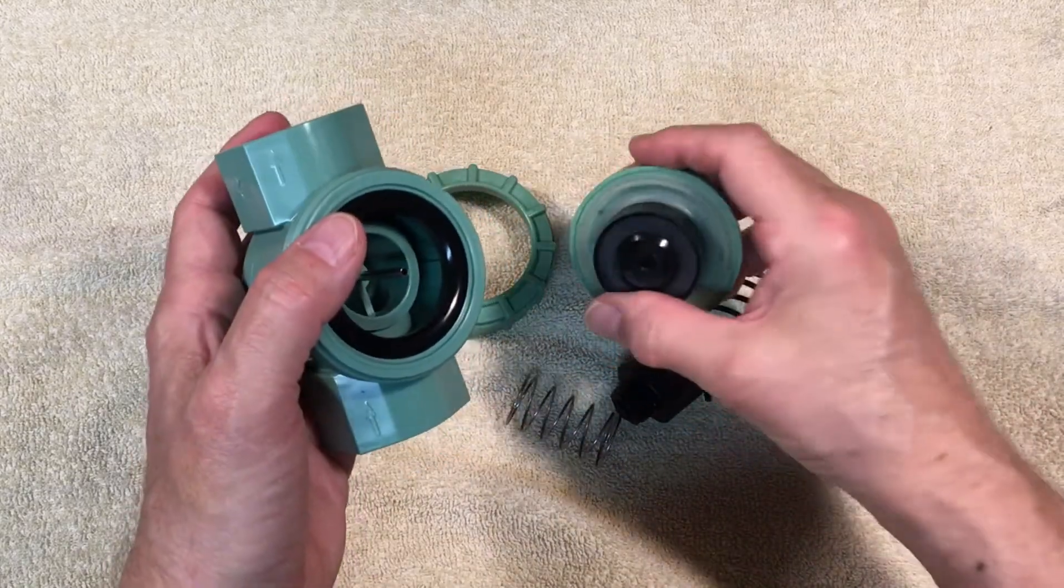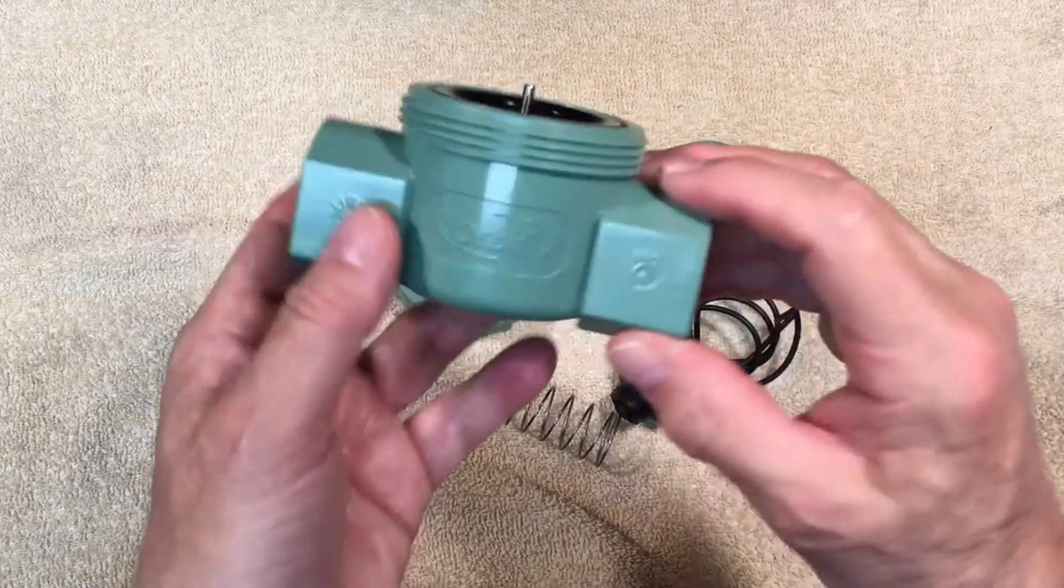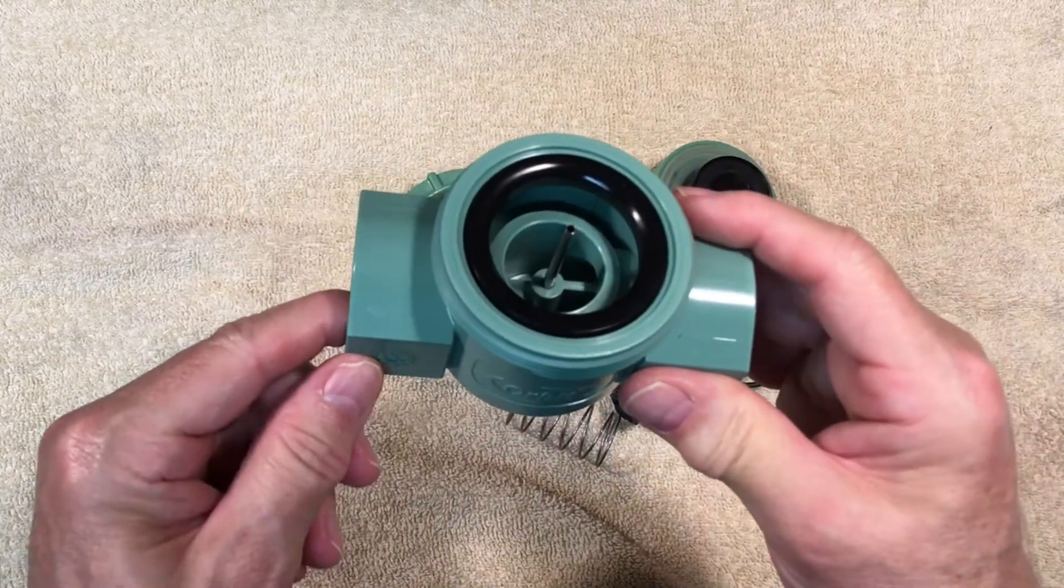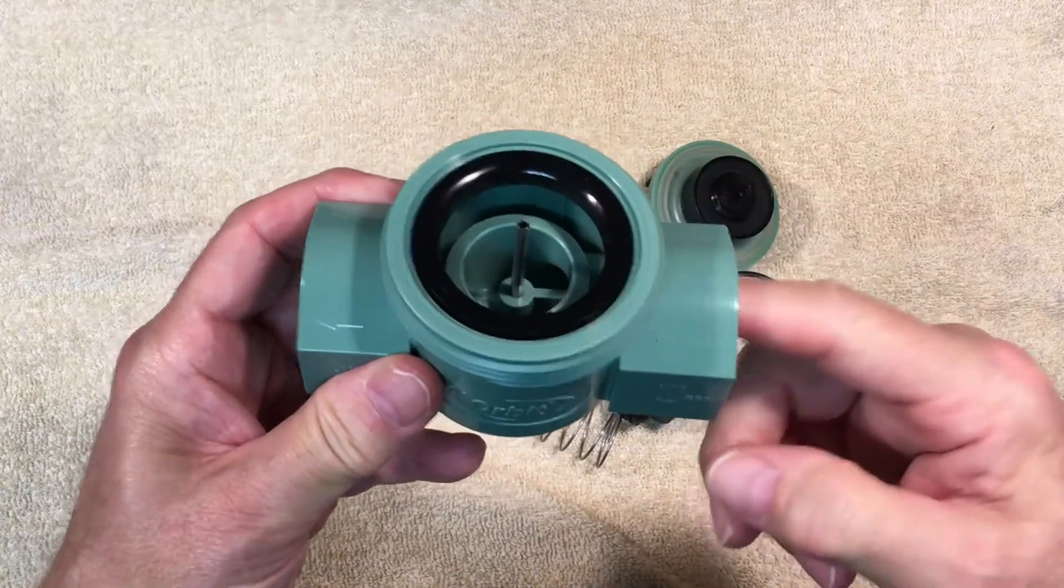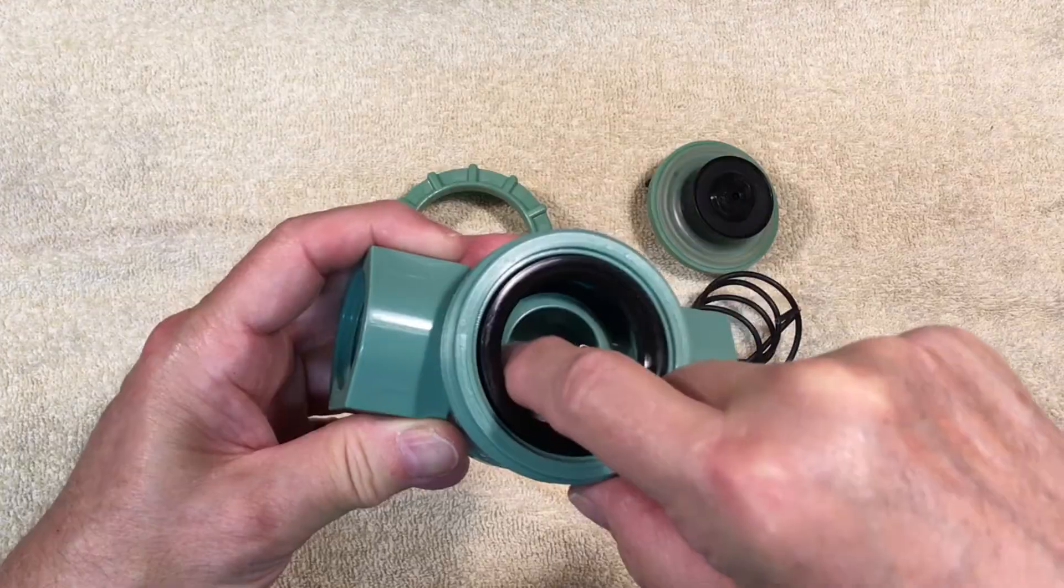When the cap is screwed down, only the inner part of the diaphragm can move up and down. The valve body has an inlet side and an outlet side. Water is free to come into the inlet, right side, and fill up the small reservoir in the middle.